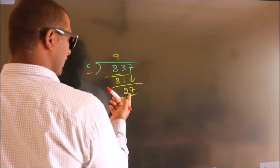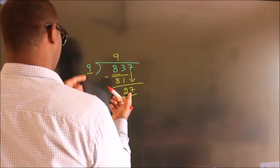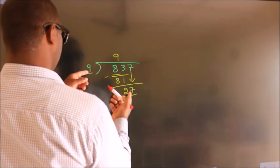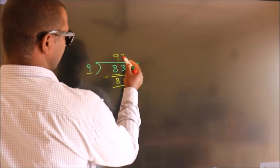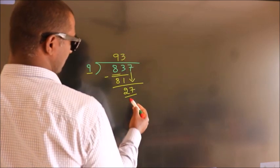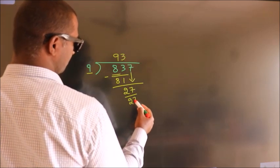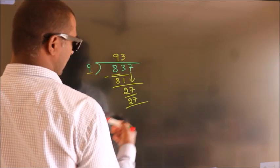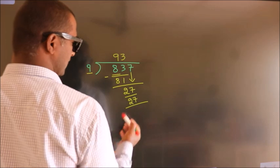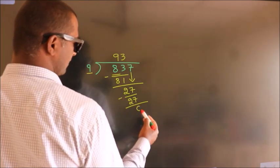When do we get 27 in the 9 times table? 9 threes are 27. Now we subtract and we get 0.